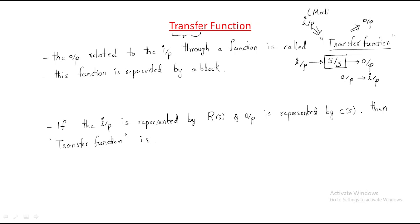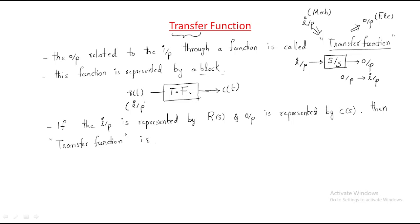For example, in a power generation system, mechanical power is the input and electrical power is the output. This process is represented by a block. So generally this function is represented by a block, where the input is taken as r(t) and the output is represented by c(t). The relation between input and output is the transfer function.